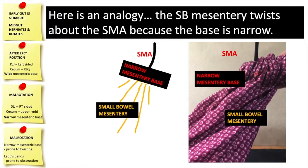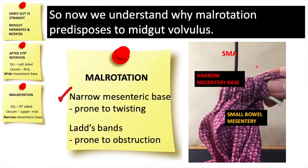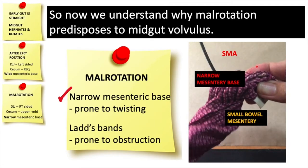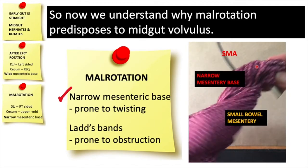In here, we see that the proximal portion of the drawstring bag would represent your narrow mesenteric base. This one represents the small bowel mesentery. The axis of rotation would be here to your SMA. So now we understand why malrotation would predispose to mid-gut volvulus. It's actually because of the narrow mesenteric base which is prone to twisting.